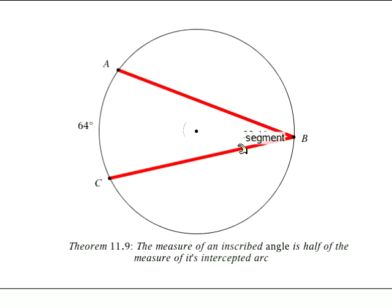An inscribed angle is this part what you see right here, angle ABC. The intercepted arc is this portion on the edge of the circle between A and C.